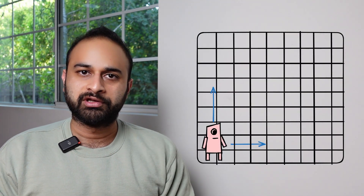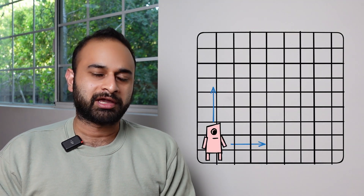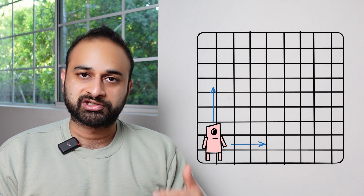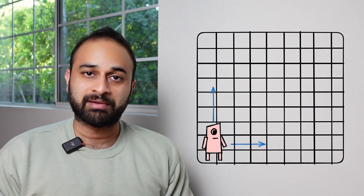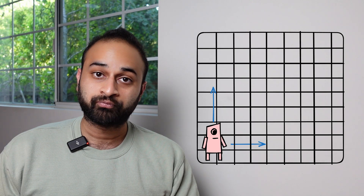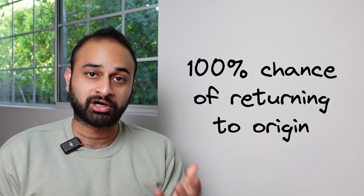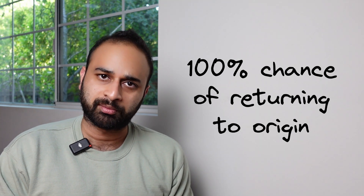We can extend this problem to two dimensions. You can imagine a random walker who's not able to just move back and forth but also left and right, with equal probability in any of the four directions, taking one step at a time. If we let them do that infinitely, we can prove again that there's a 100% chance — probability one — that the random walker will return to the origin.